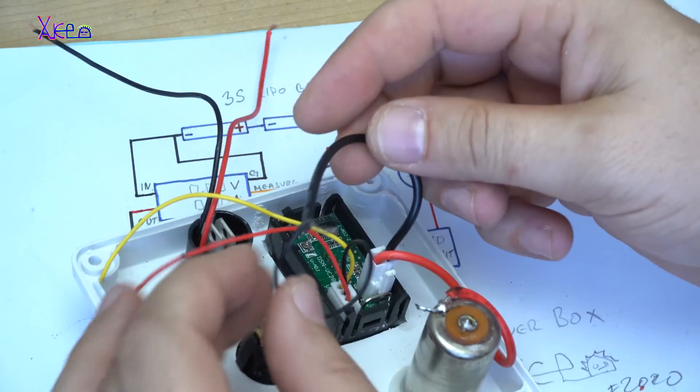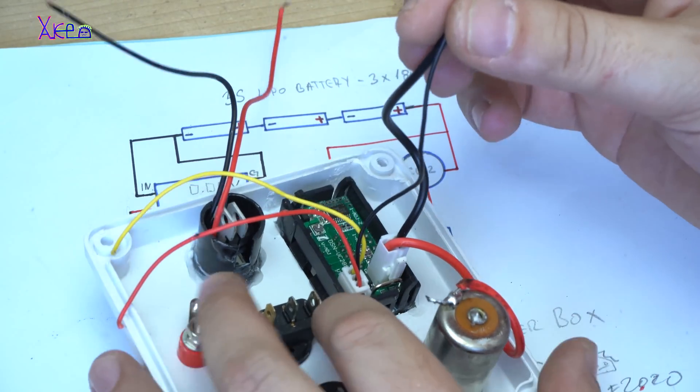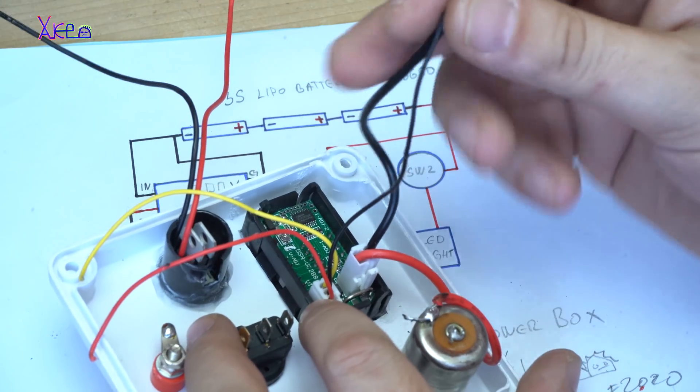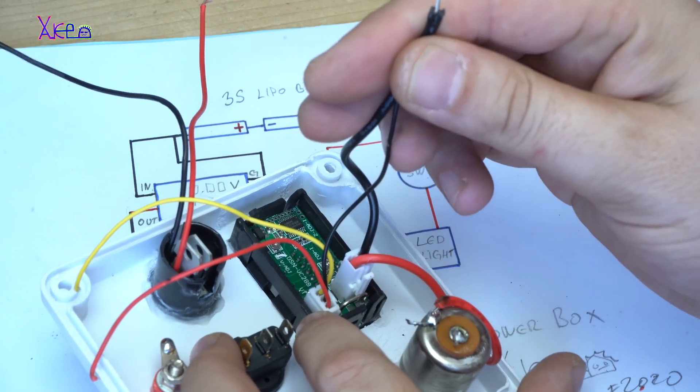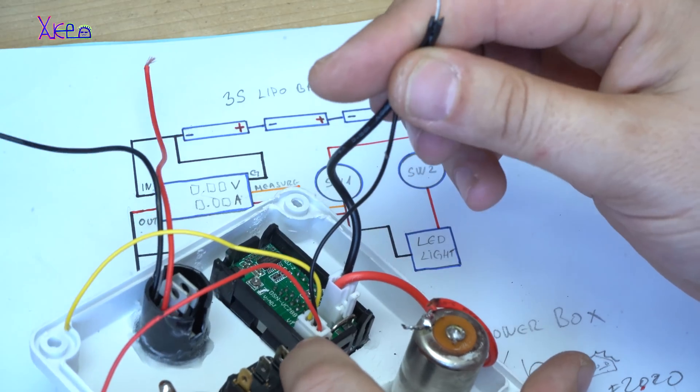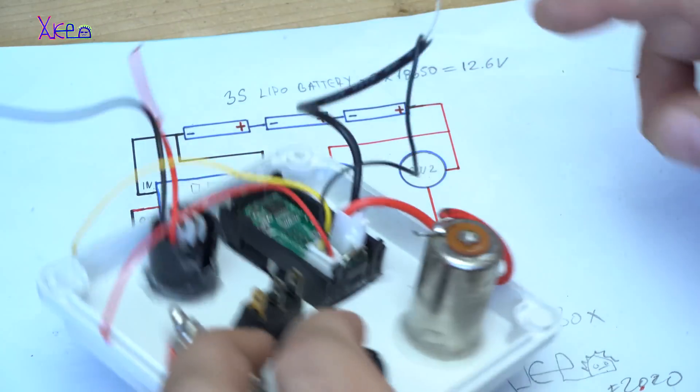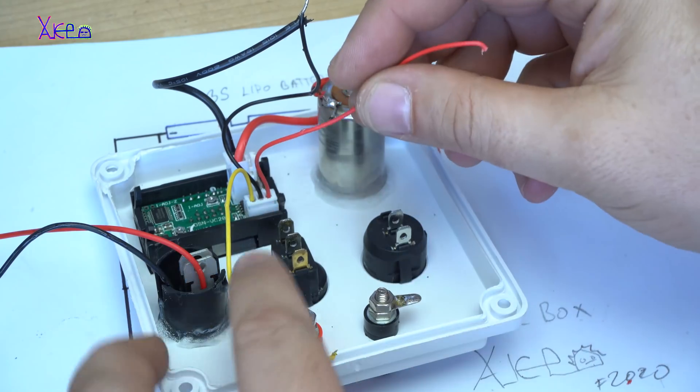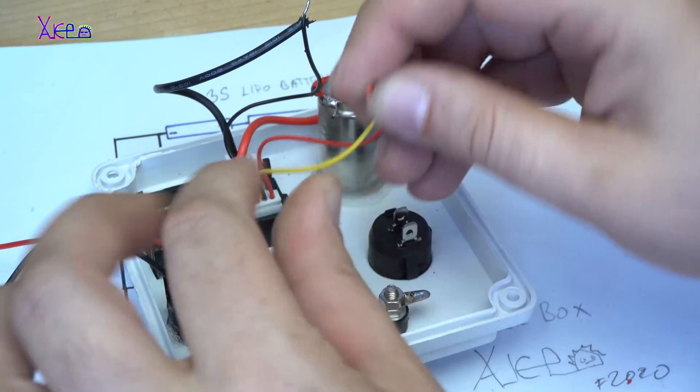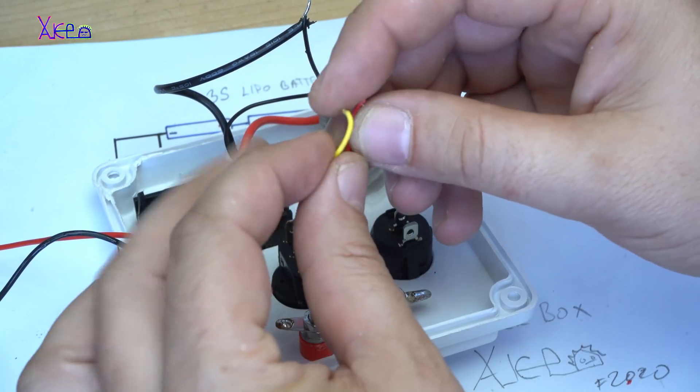The black wire from current and the black wire from voltage of the module will go directly to the negative pole of the batteries. The red wire and yellow wire from the module will be connected together.